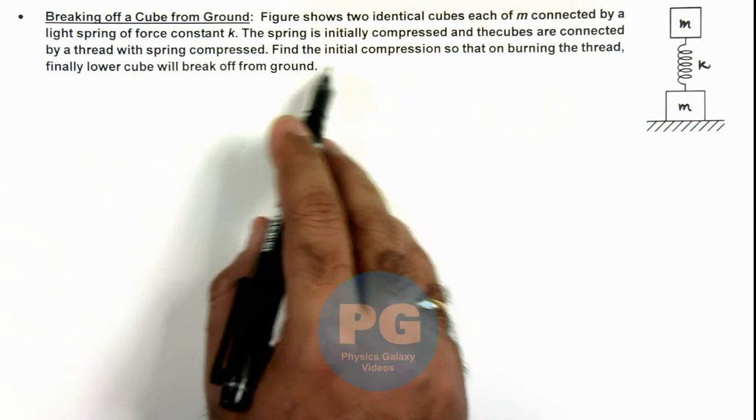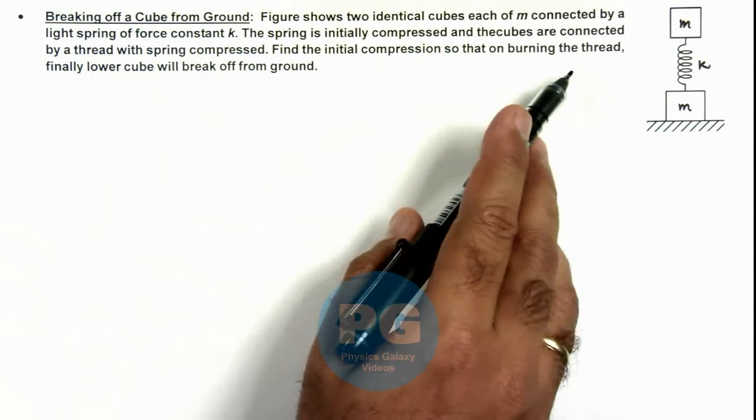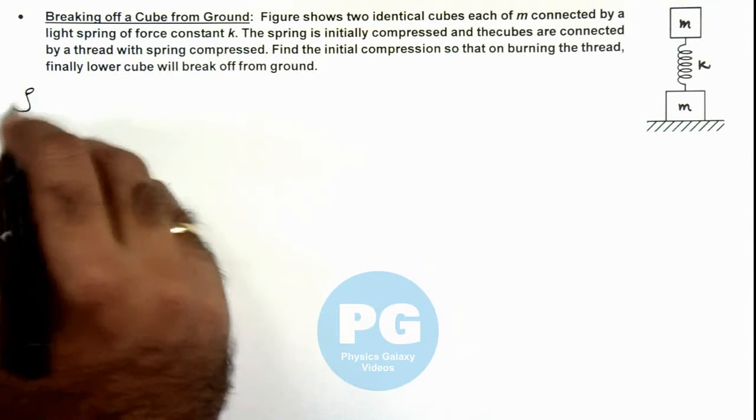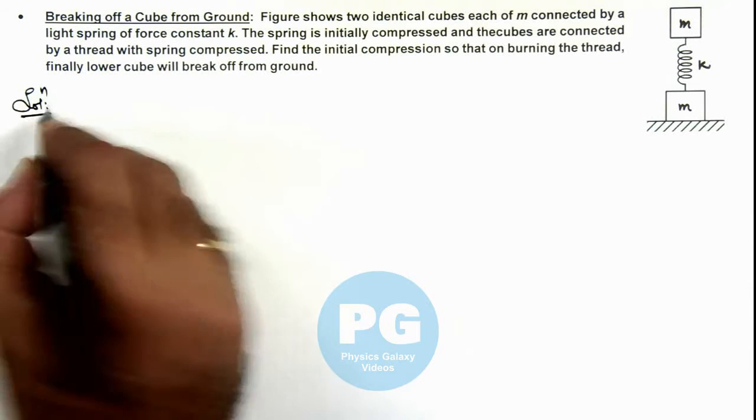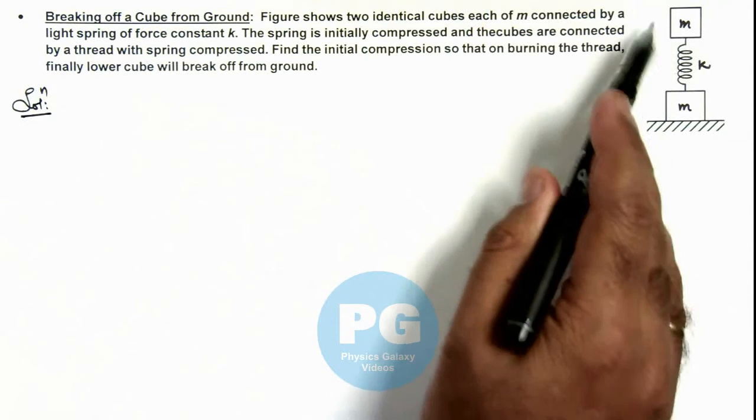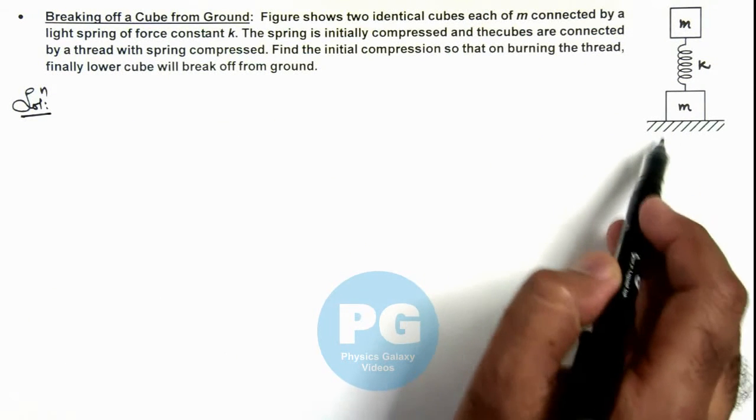We are required to find the initial compression in the spring so that on burning the thread, finally the lower cube will break off from ground. When we burn the thread, the upper block will bounce and it should bounce to a level so that the spring force on the lower block should balance its weight.